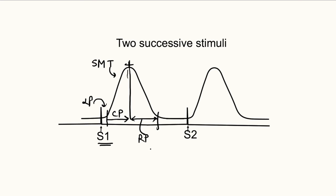In this video we will see what will be the effect on a simple muscle twitch if we give two successive stimuli, that is two stimuli one after the other. Two stimuli are given: with the first stimulus we record a simple muscle twitch, and then after a sufficient time has passed, the second stimulus S2 is given, and again we get a simple muscle twitch.